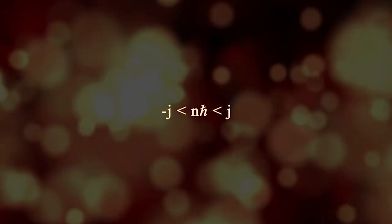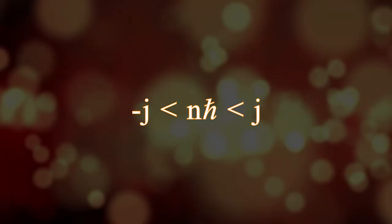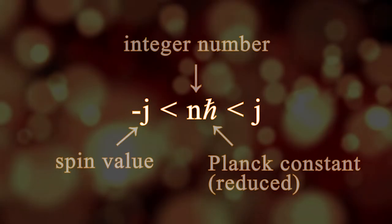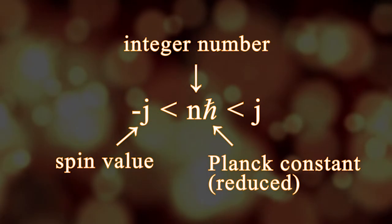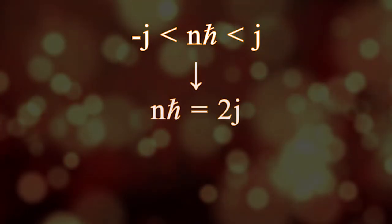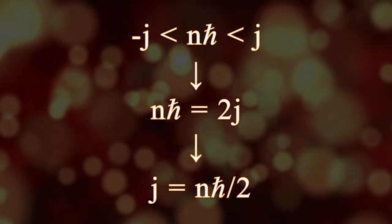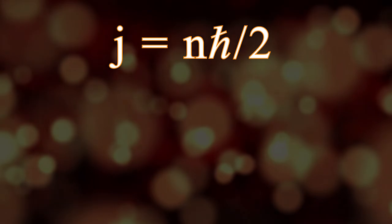So the projection magnitude of a specific particle's spin must adhere to this inequality, where n is an integer, the number of units of Planck constant that make up our projection value. This yields specific requirements for the total spin value of a particle.